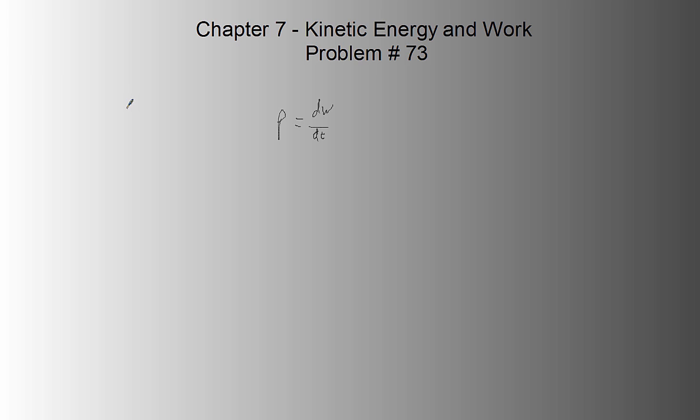Problem 73. We got an elevator cab, so let's just draw the cab. Of course, it has a weight, Fg, and according to the problem, it's carrying the maximum load and itself, so that is a mass of 4500 plus 1800 times acceleration due to gravity, 9.8. That's the weight.